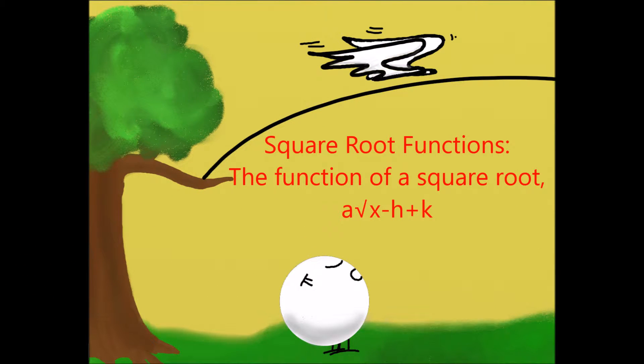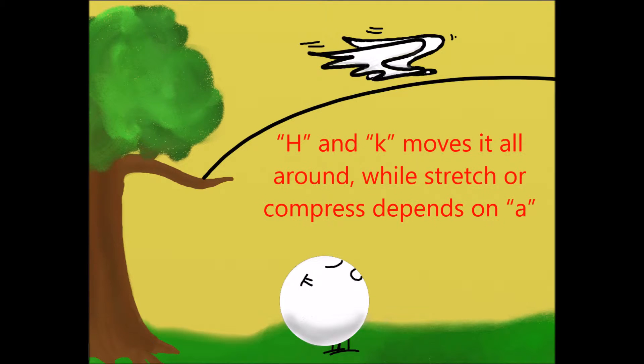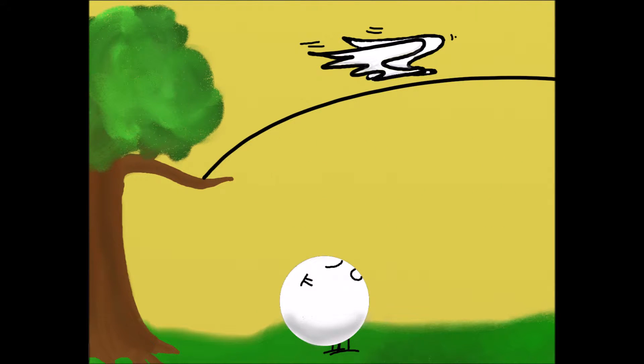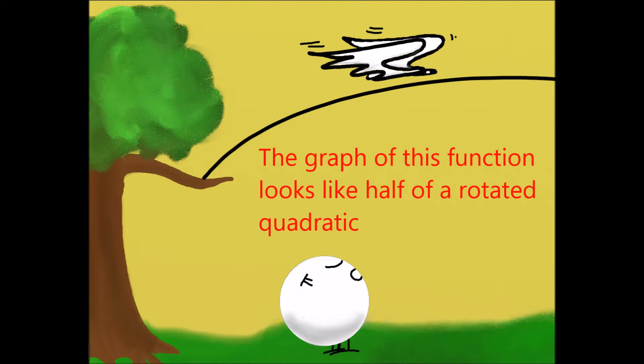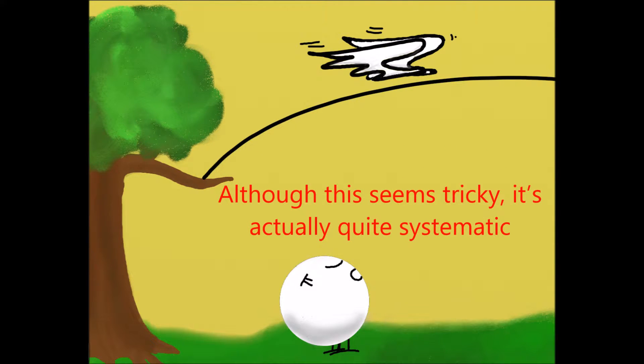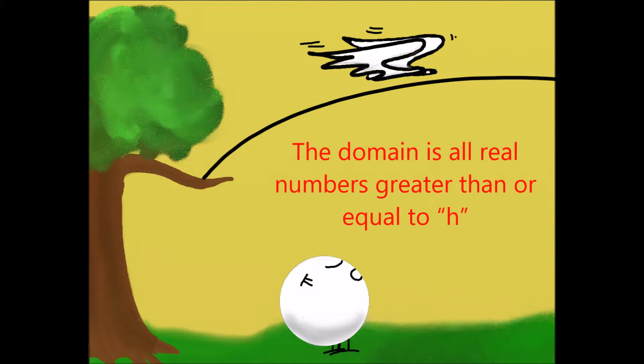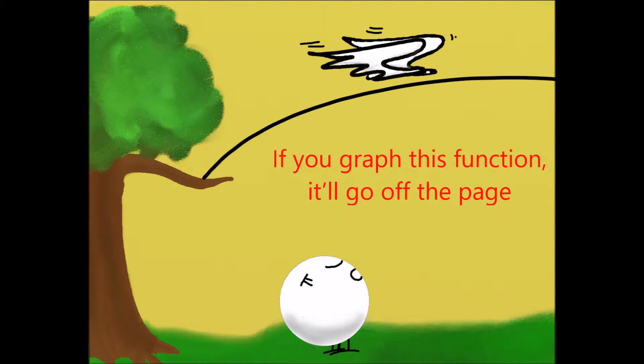The function of a square root, a rad x minus h plus k, h and k moves it all around, while stretch or compress depends on a. The graph of this function looks like half a rotated quadratic. Although this seems tricky, it's actually quite systematic. The domain is all real numbers greater than or equal to h. If you graph this function, it'll go off the page.